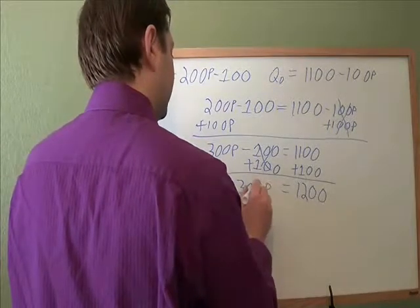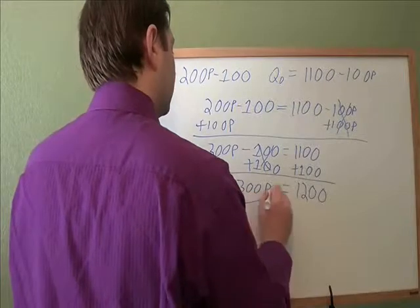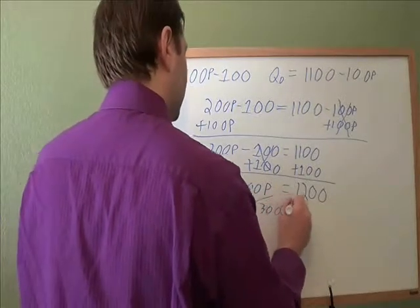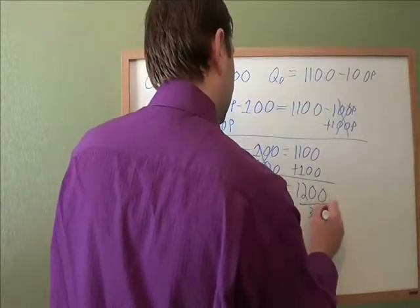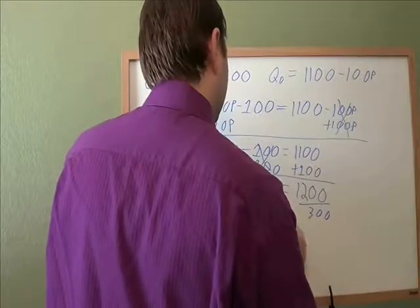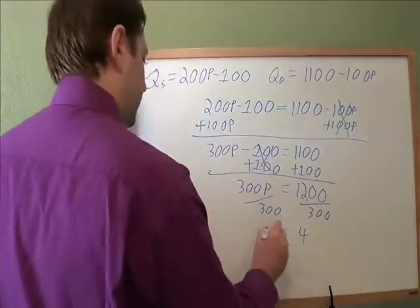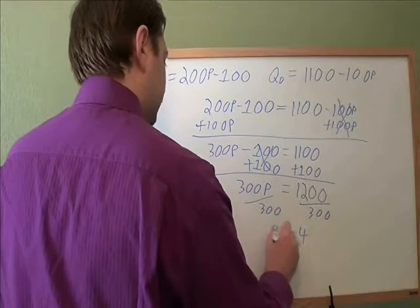Final step in getting p by itself. We need to get rid of this times 300, so we divide by 300. And 1,200 divided by 300 is 4. So the equilibrium price is $4.